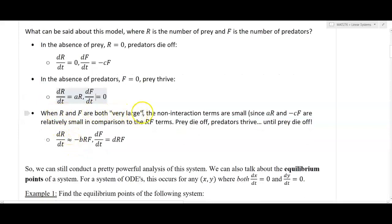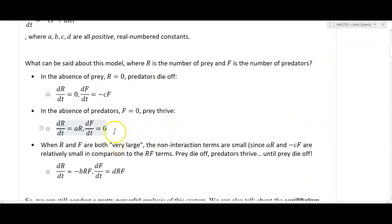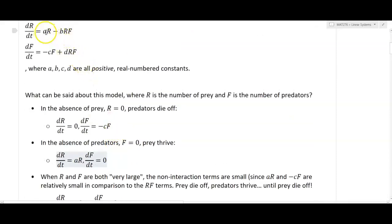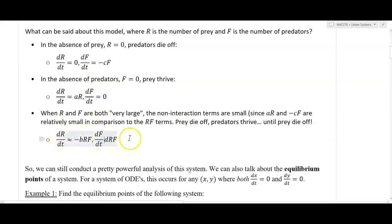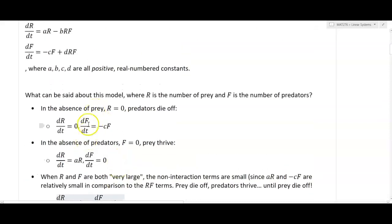When R and F are both very large, the non-interaction terms are small since AR and negative CF are relatively small in comparison to the RF terms. If R and F are really large, the AR term will be much smaller than the negative BRF term, and the negative CF term will be much smaller than the DRF term. So these models are approximately equal to just the interaction terms, meaning the prey die off because predators are eating them, and the predators are thriving. Eventually this is not permanent, but once the prey die off, these interaction terms can start to become small again, and we're back to one of these two scenarios.